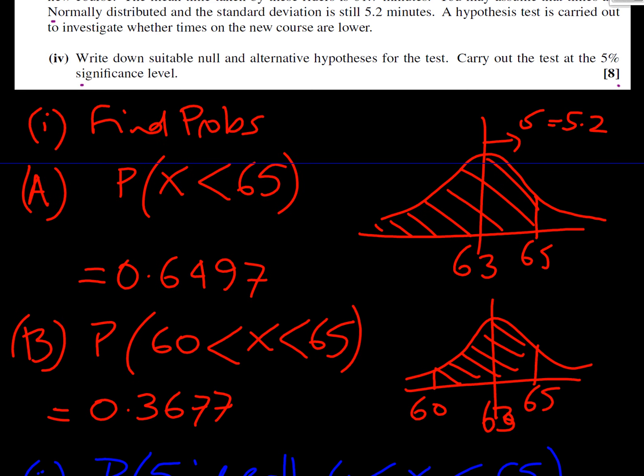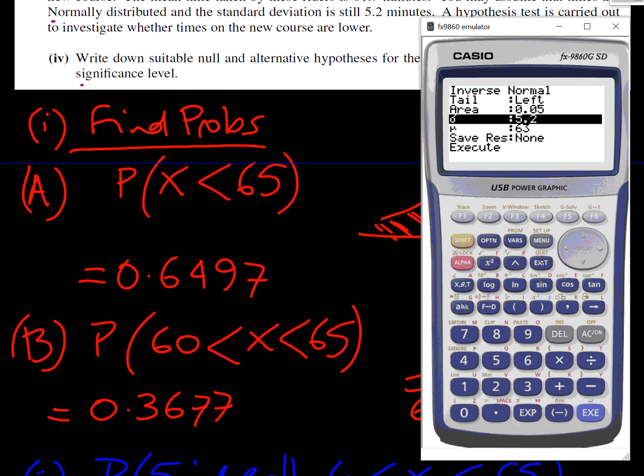We're going to find the probabilities. The first thing we're going to do is draw our diagram. So here, our mean is 63, the X value we're interested in is 65, and we're interested in less than, so it's this area to the left. What's the best way to get this out? It's to get our calculator out.